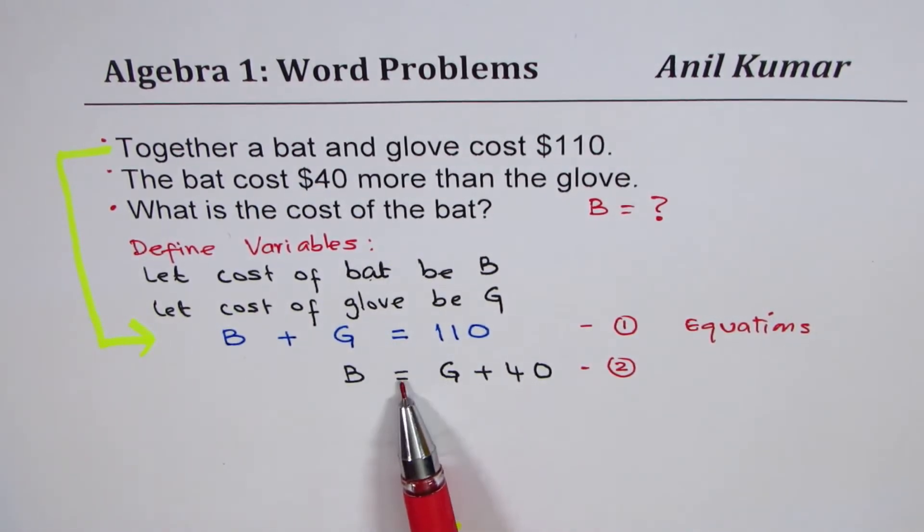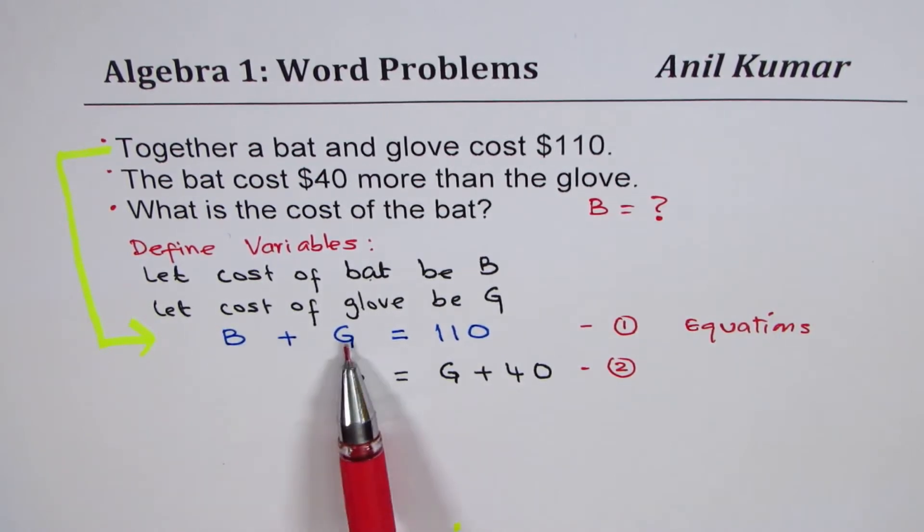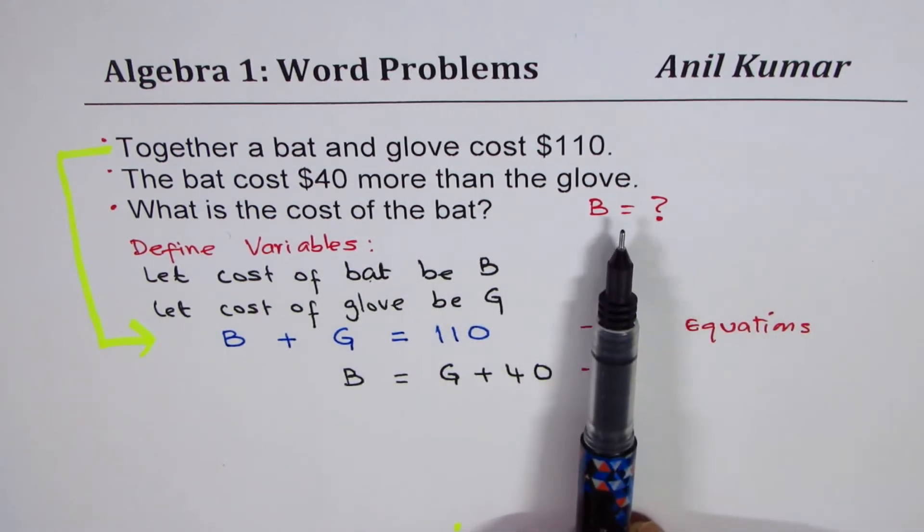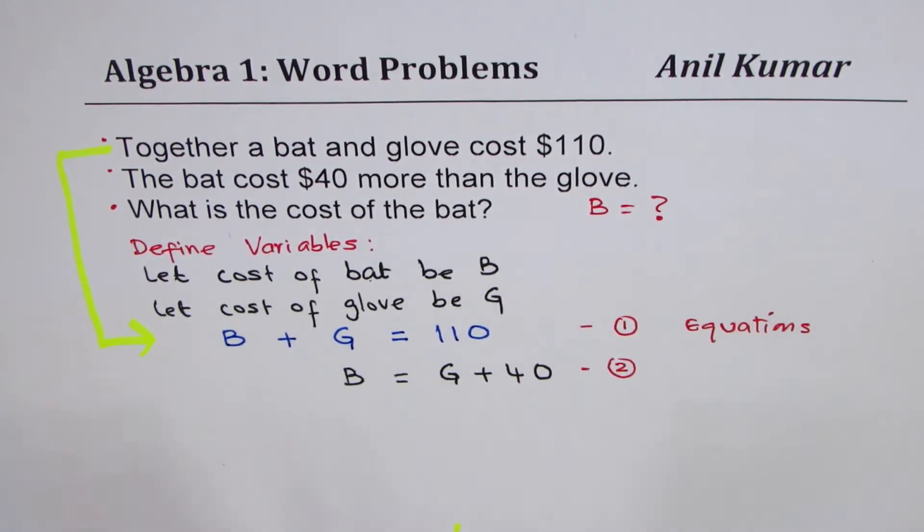Now, if you have two equations and we have two unknowns, we don't know the cost of the bat, we don't know the cost of the gloves, then we can always find cost of each. Now, the idea is we are interested in cost of the bat. So, anyway, we'll find cost of both in this case. Let's keep it simple.